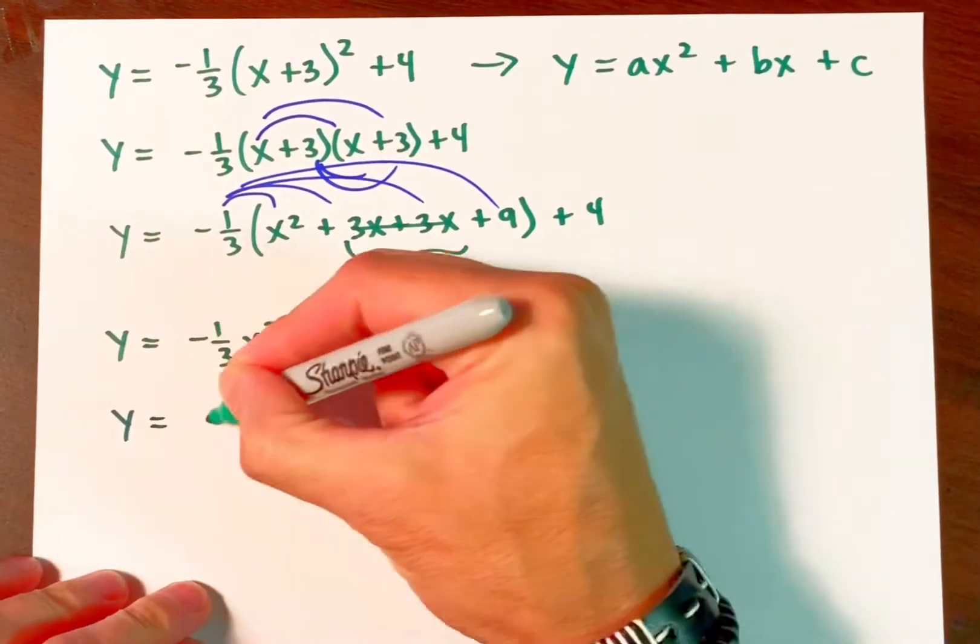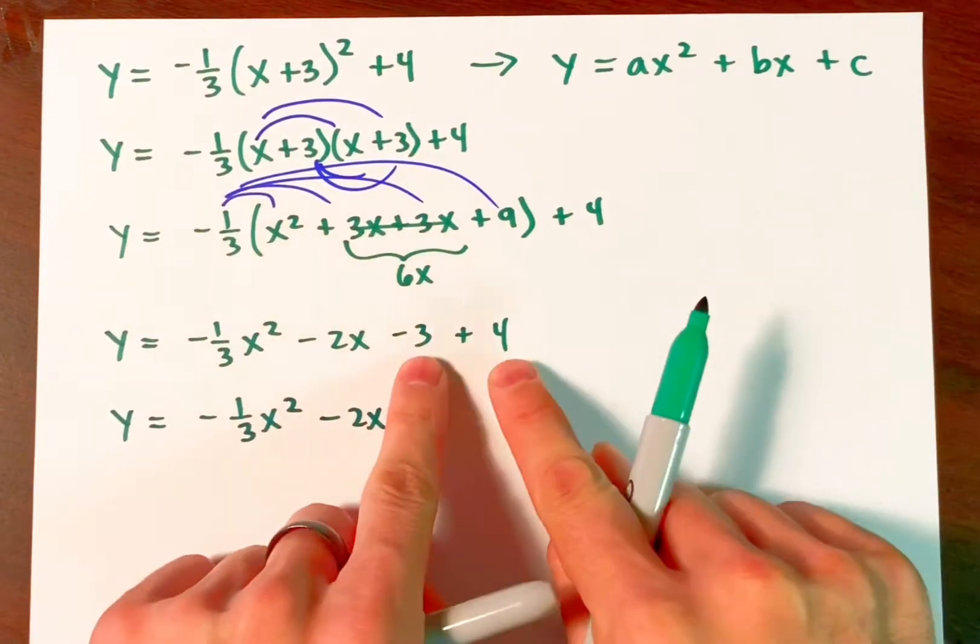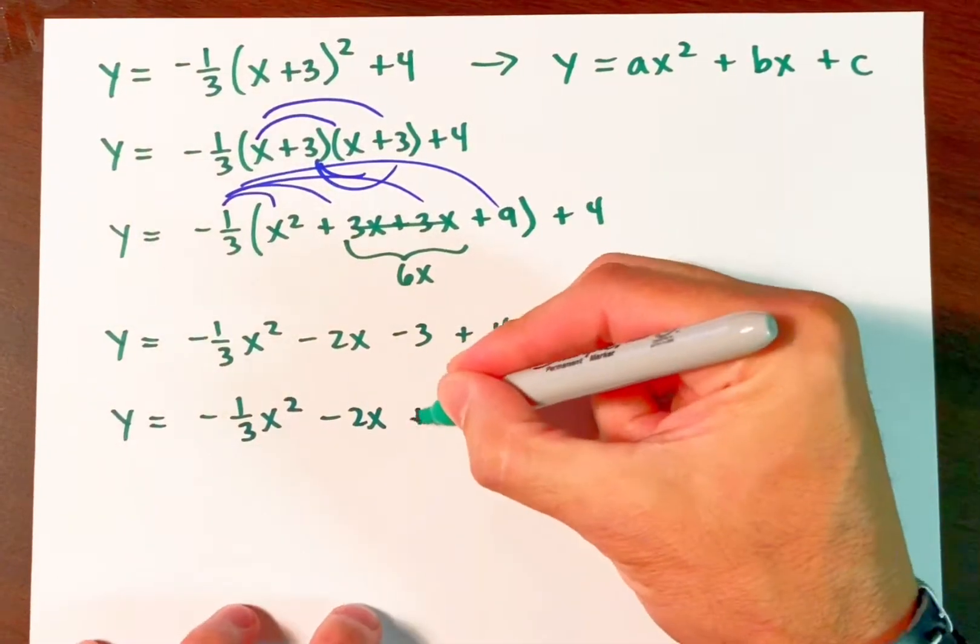So we have y equals negative one third x squared minus 2x. And this constant is positive one.